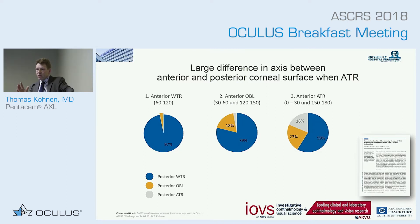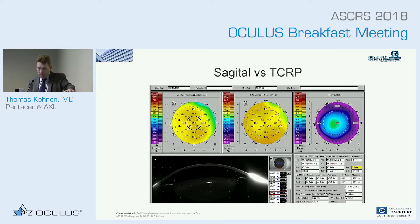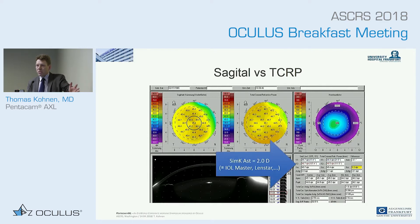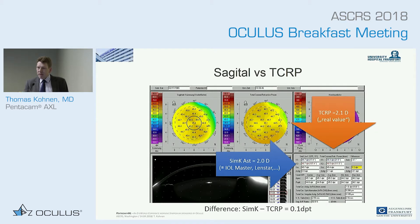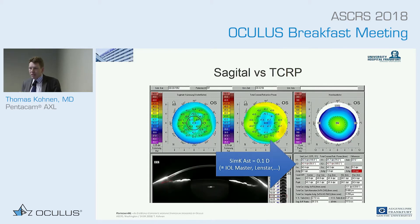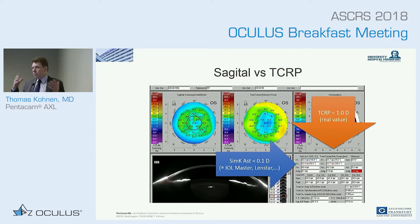Here's another example comparing sagittal versus total corneal refractive power. In one case, a SimK of 2.0 diopters of astigmatism from IOL Master or Lenstar matches the total corneal refractive power of 2.1 diopters — a difference of only 0.1, so you would not have missed it. But in another case, the SimK shows only 0.1 diopter, while the total corneal refractive power including the posterior is one diopter. Here comes the real difference — you may need to select a toric IOL, for example in presbyopia-correcting IOLs, because you have to correct that astigmatism.